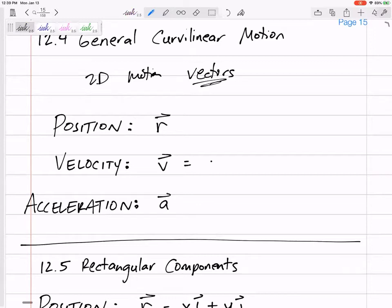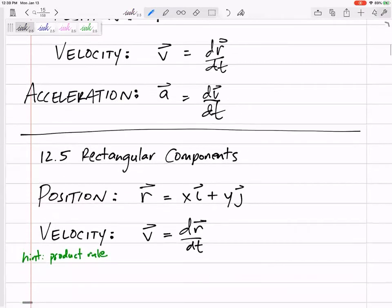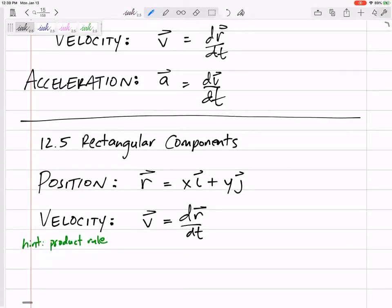Velocity would be DR/DT, acceleration DV/DT. But we've got to take a derivative of a vector. So how can we take a derivative of a vector? That's what we'll consider.